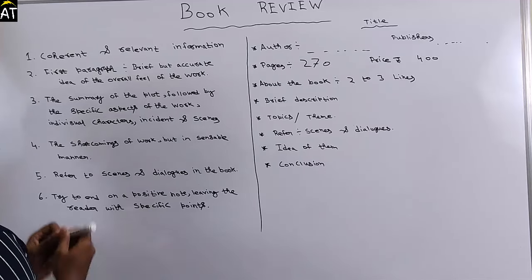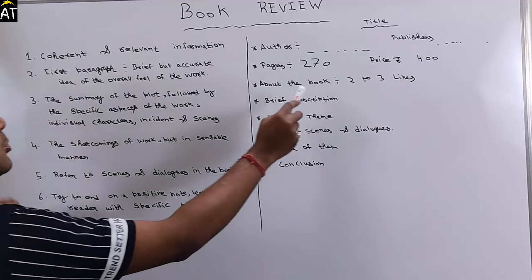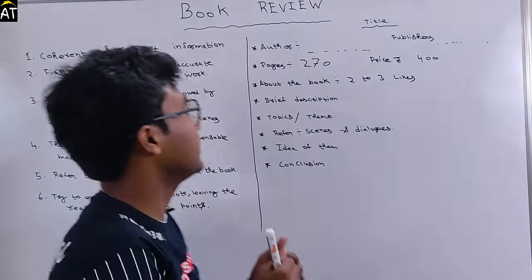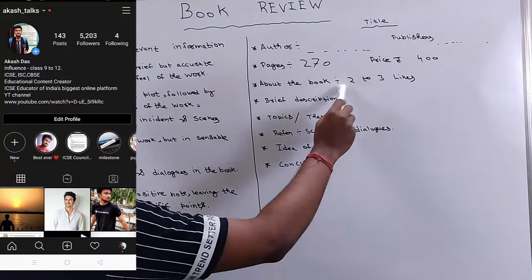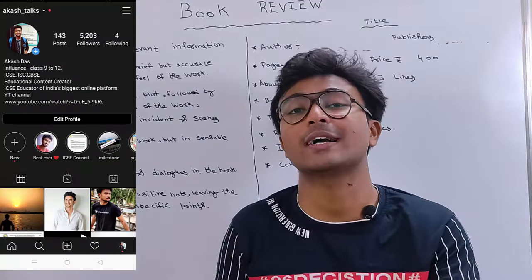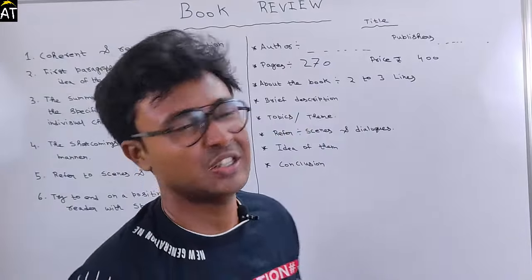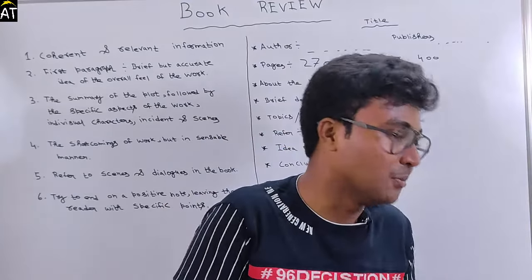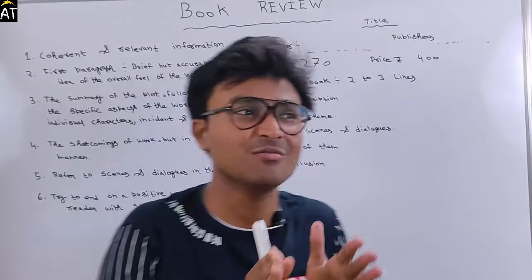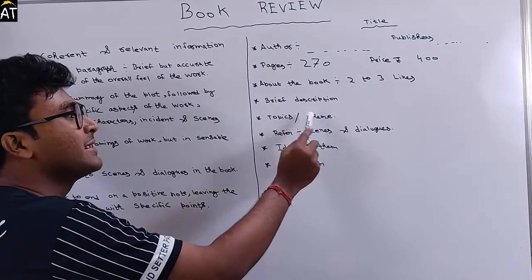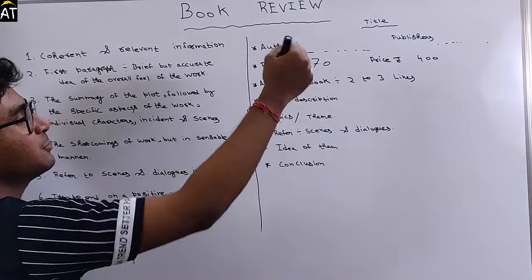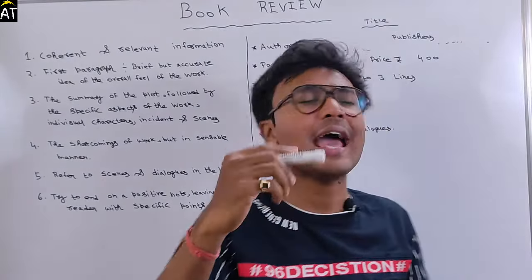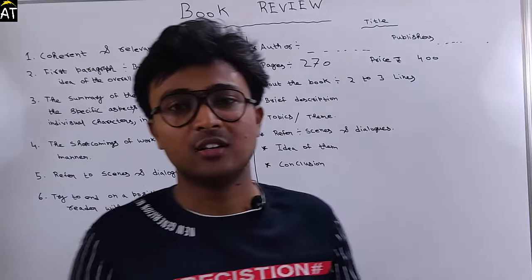In the first paragraph, write about the book in two to three or four lines — give a brief idea about the book. Mention things like in how many languages the book is published, and its features. After that, give a brief description of the book, which is very important. In two to three lines, write about the topic — what the book is about — and then mention those things.